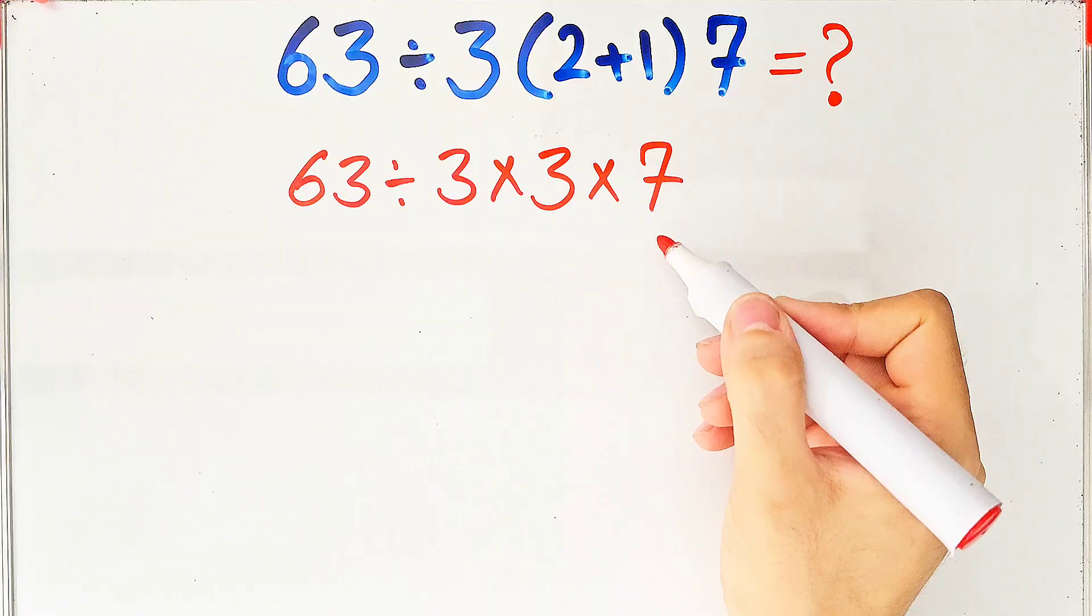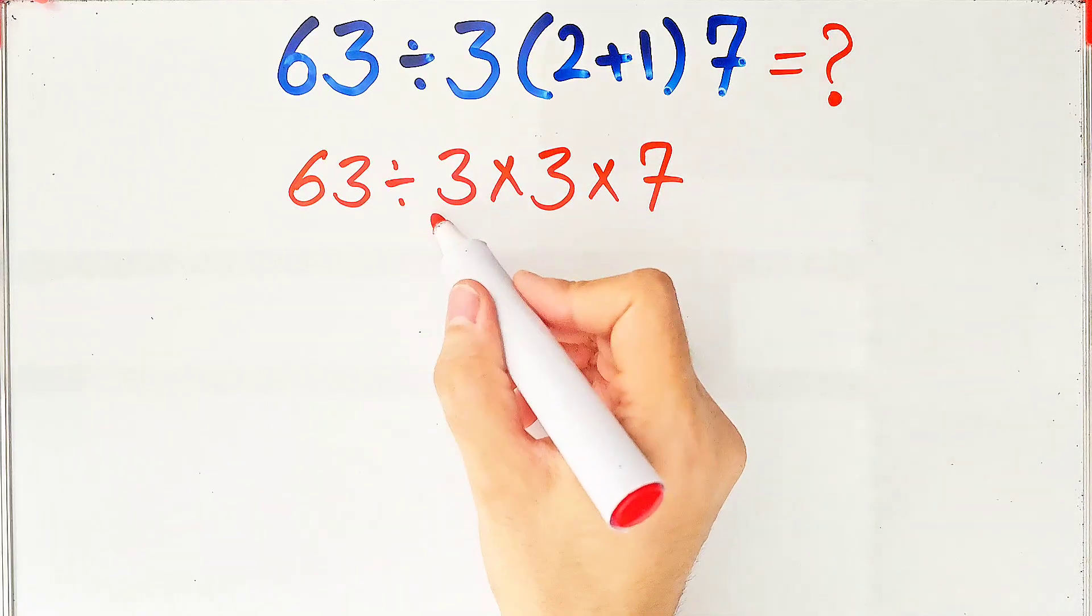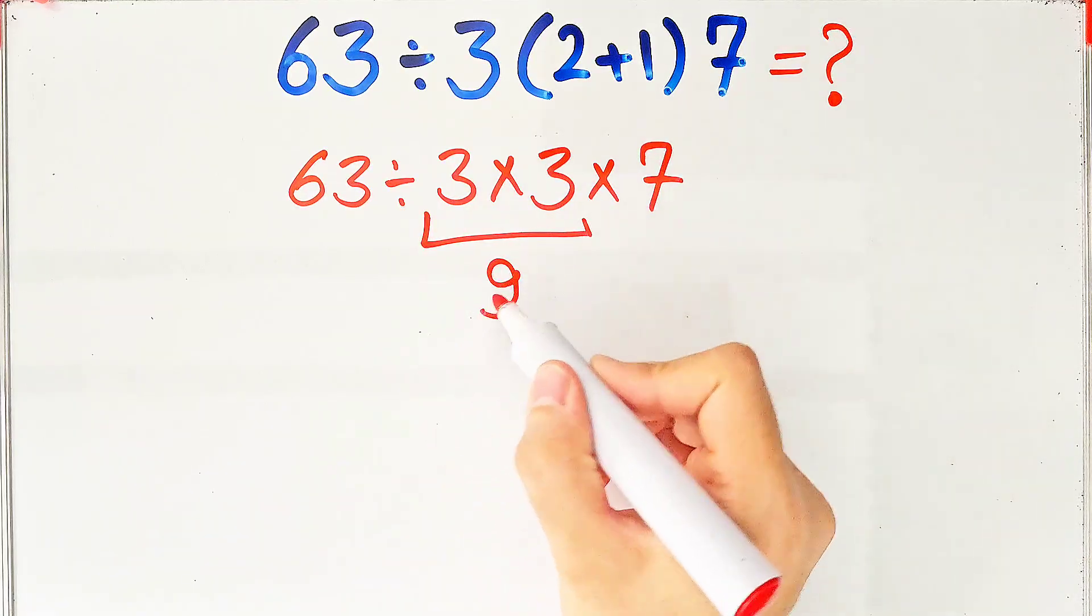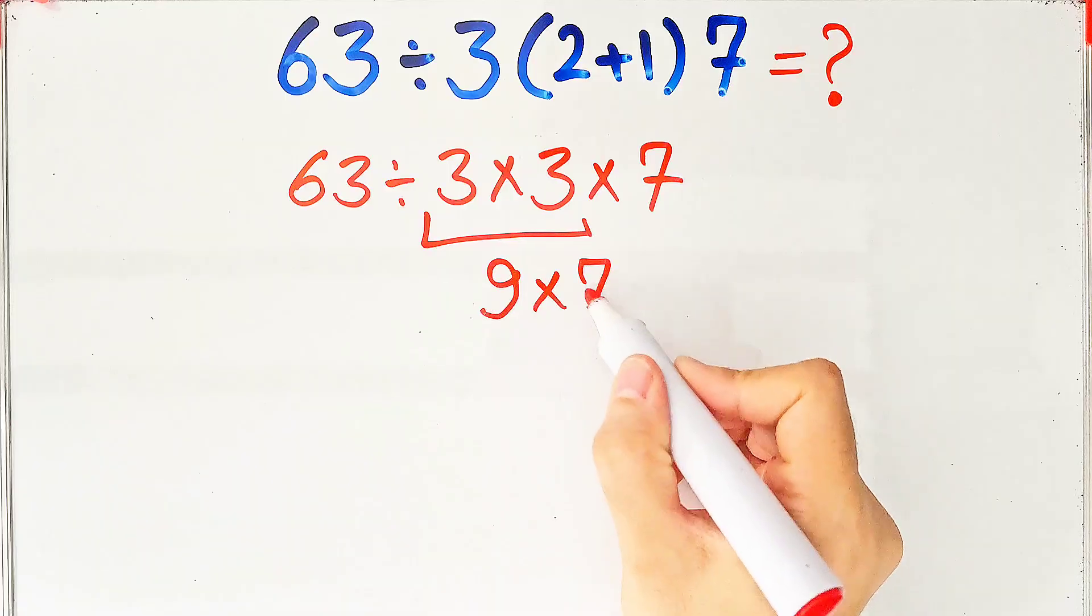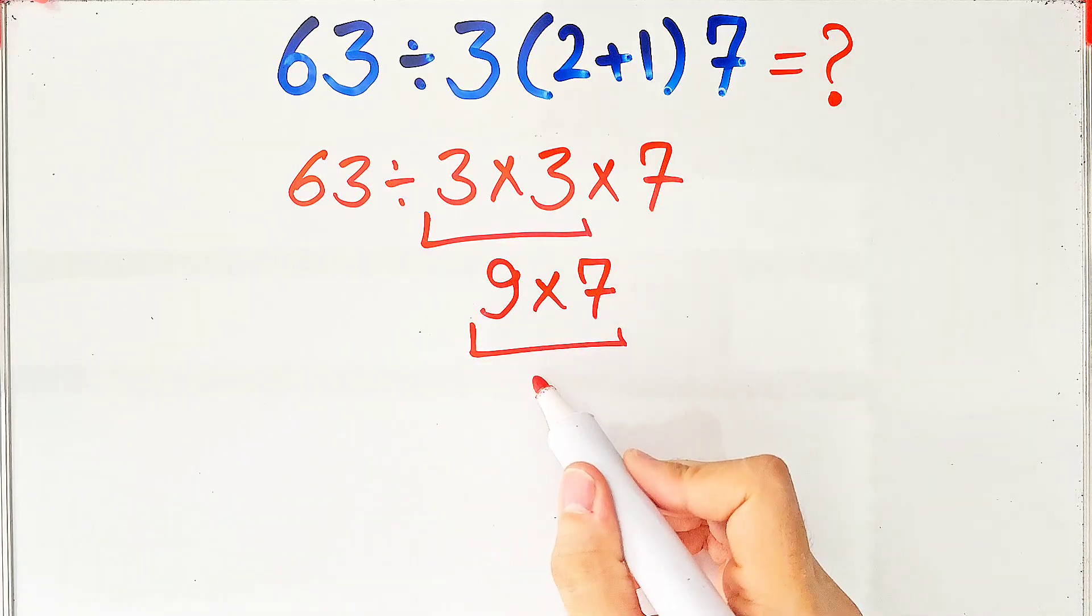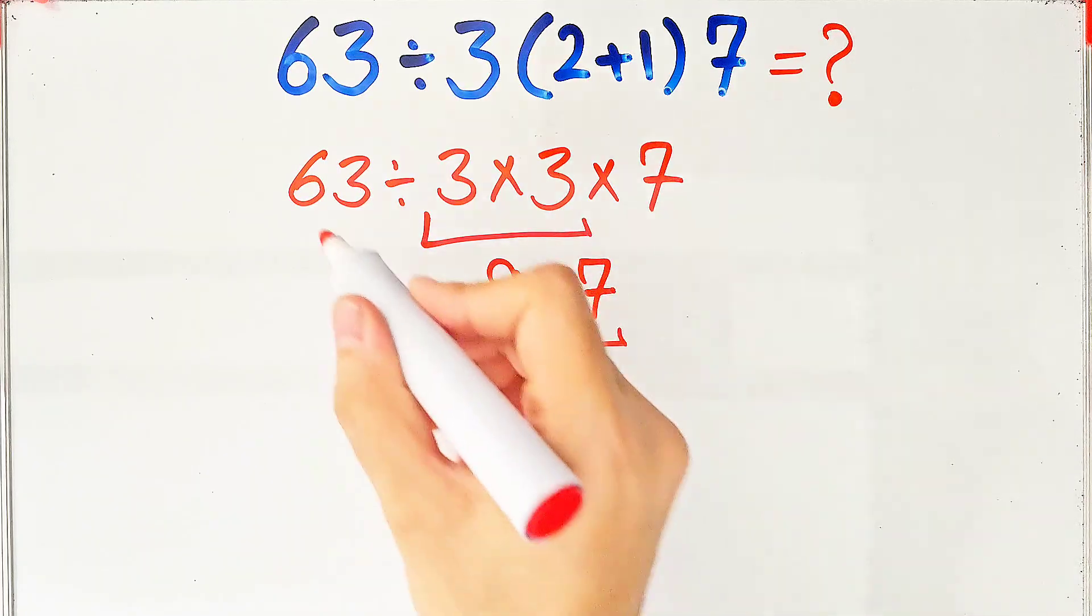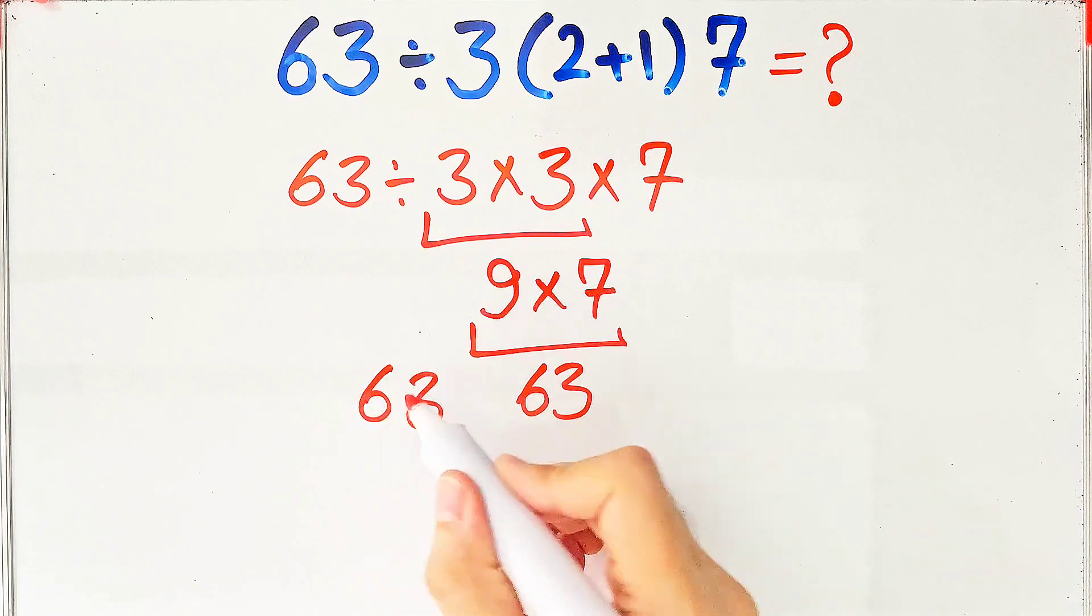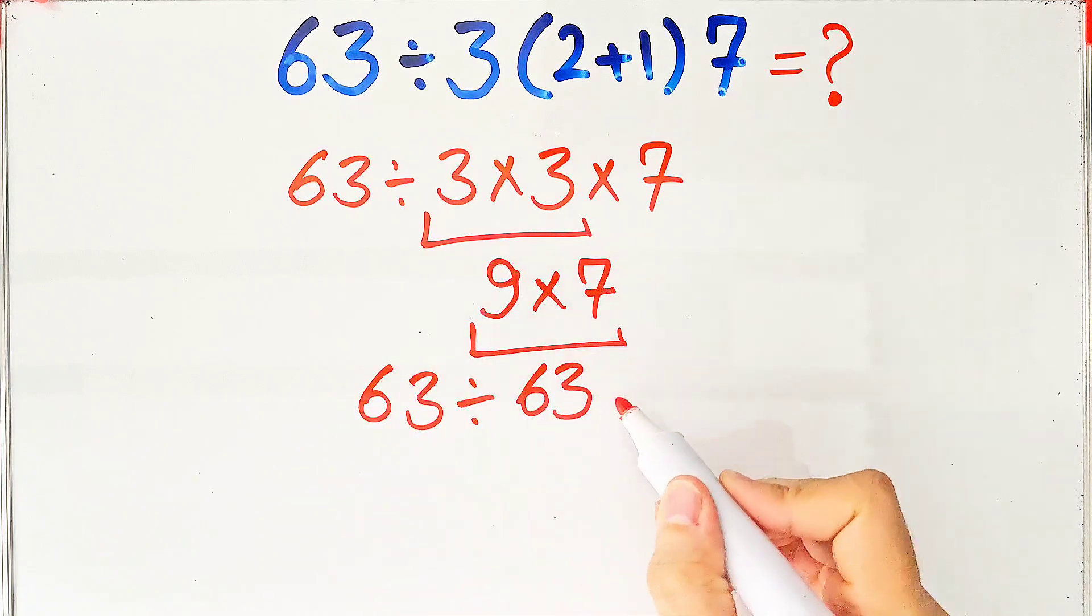3 times 3 equals 9, and 9 times 7 equals 63. And they say 63 divided by 63 equals 1. But this answer is definitely wrong.